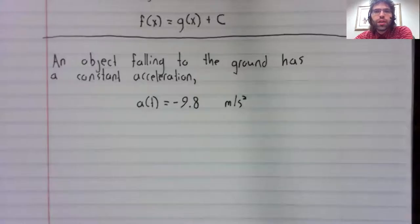An object falling to the ground has a constant acceleration. Under Earth's gravity, the acceleration function is negative 9.8.